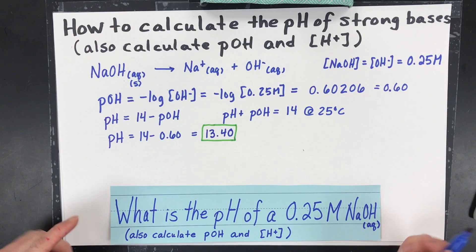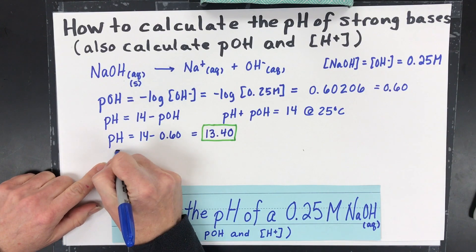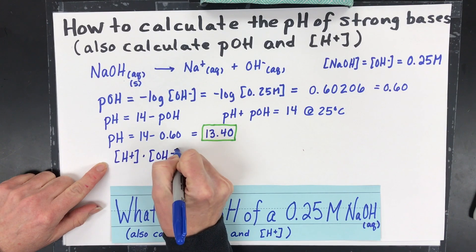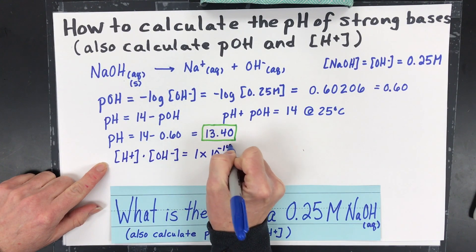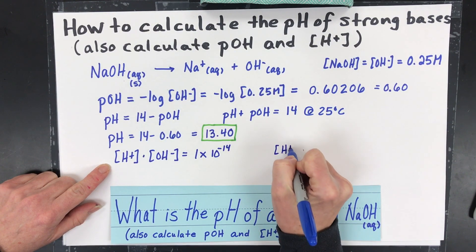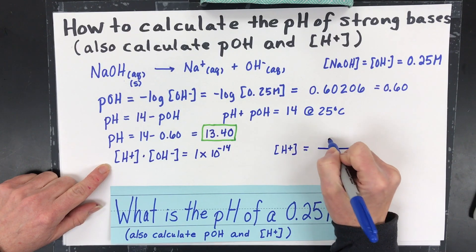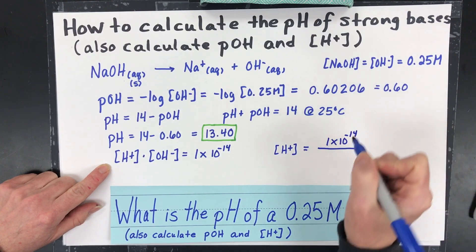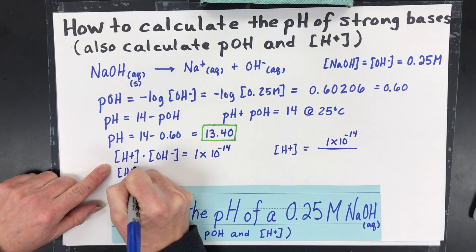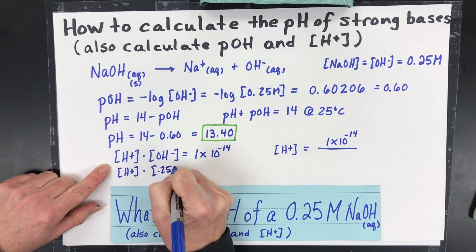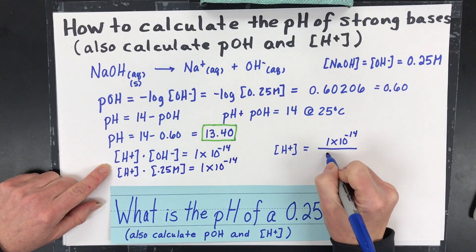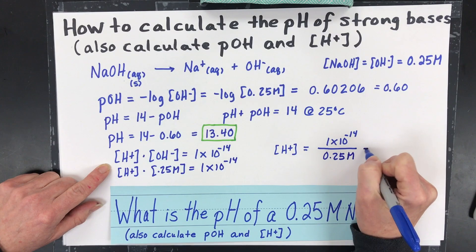Next, we're not done yet. So this is my hydroxide concentration. What I want to do is find my hydrogen ion concentration. So again, at 25 degrees, this fact is true, that it equals 1 times 10 to the minus 14. So if I wanted the hydrogen ion concentration, I'm going to do a little algebra here. 1 times 10 to the minus 14. And then I would divide by, this is 0.25. So if this was 0.25, we're going to put that in the denominator. So 0.25. I'm going to keep the unit.